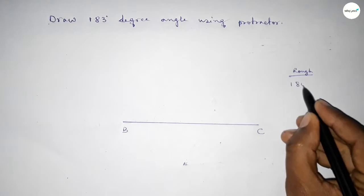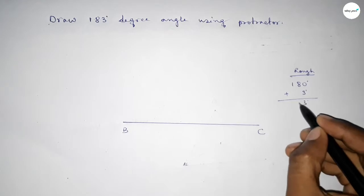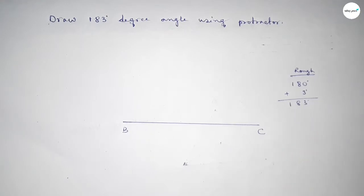So if we add 3 degree angle with 180 degree, then we can get 183 degree angle. So first we have to count 180 degree angle.